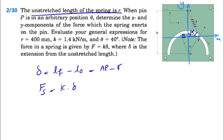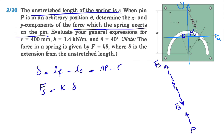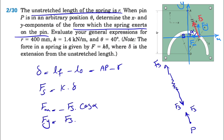We have to figure out the force that the spring exerts on the pin. When the spring stretches it will be in tension — let's call this force fs. That's the force applied on the spring, but what we're interested in is the force on point P, the pin, which by Newton's law is the same force in the opposite direction. So fx equals negative fs times cosine of alpha, and fy equals fs times sine of alpha.